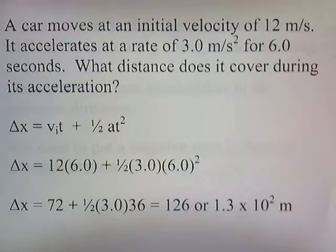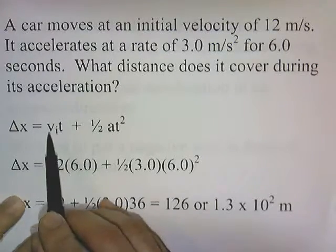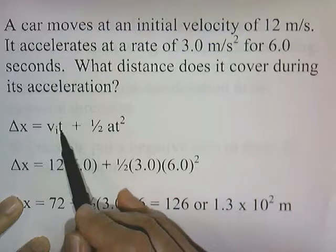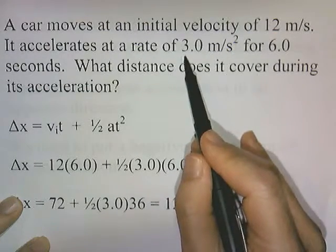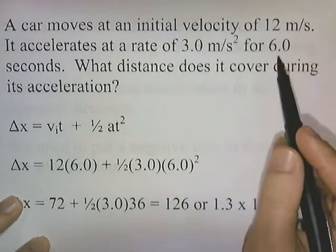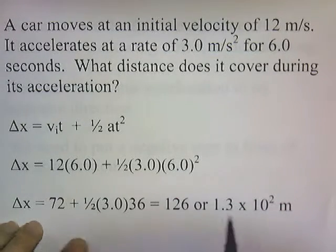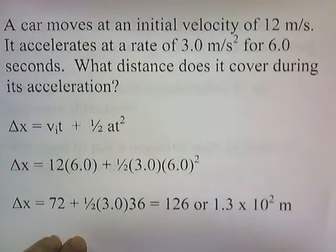A car moves at an initial velocity of 12 meters per second. It accelerates at a rate of 3 meters per second squared for 6 seconds. What distance does it cover during its acceleration? We're solving for delta x. Vi is 12, t is 6, a is 3, and t squared is 36. So 12 times 6 is 72, and one-half times 3 times 36 gives 54. Adding these gives 126, or to two significant figures, 1.3 times 10 to the 2 meters.